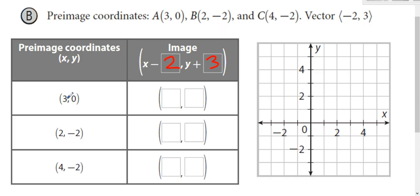So subtract 2, you get 1. Add 3, you get 3. Subtract 2, you get 0. Add 3, you get 1. Subtract 2, you get 2. Add 3, you get 1.